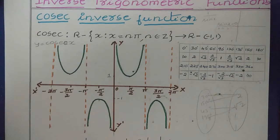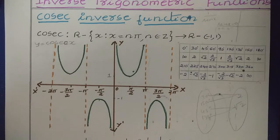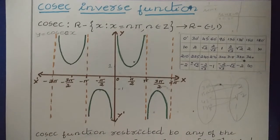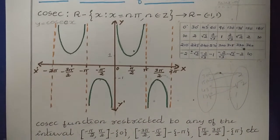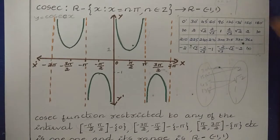Next, we are interested in the Cosec Inverse Function. We know from the first chapter that the inverse of a function exists only if the function is invertible. Invertible means the function must be bijective. And to call any function bijective, it must be one-one and onto. So now let us see whether the Cosec Function is one-one or not, so that we can find the inverse.